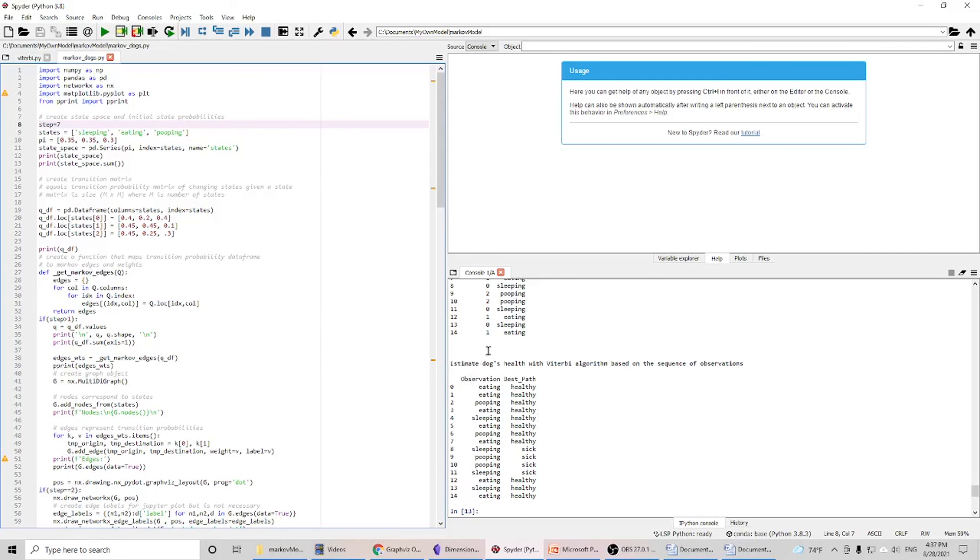After we apply our Viterbi algorithm, we can get the results. If we have observations in this sequence, based on our model, we can figure out from step 0 to step 7, the dog is healthy.